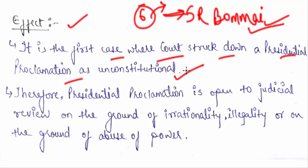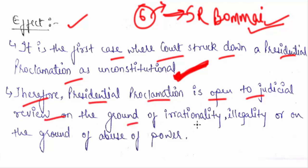Sundar Lal Patwa was the first case in which a presidential proclamation was declared unconstitutional. More recently, there was a case from Arunachal Pradesh in which the President's Rule was also declared unconstitutional — so you should have some knowledge of current issues too. Therefore, presidential proclamation is open to judicial review on the grounds of irrationality, illegality, and abuse of power.